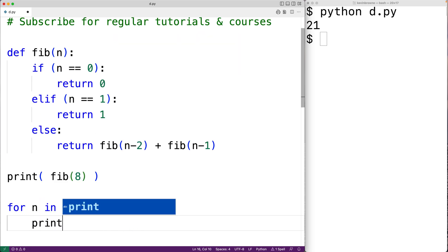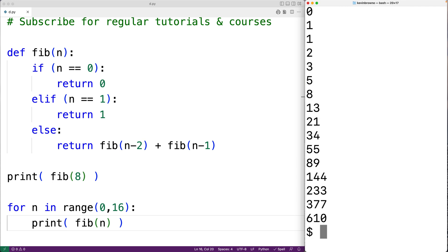Then here we could have print fib when it's passed n. We could save this and run our program, and here we can see that we do calculate successfully the first 16 terms in the sequence.